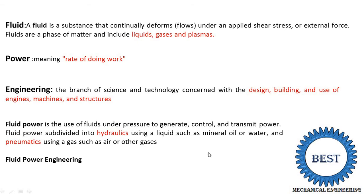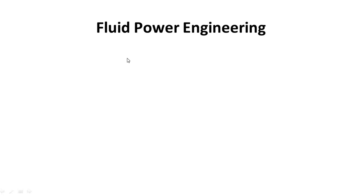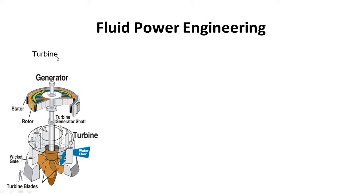In fluid power engineering, we generally study three devices. The first one is the turbine. A turbine is a mechanical device in which we supply hydraulic energy — we supply liquid, that is water — and this water energy is converted into mechanical energy as output. It is known as a turbine, and it is a hydraulic device because we use liquid.